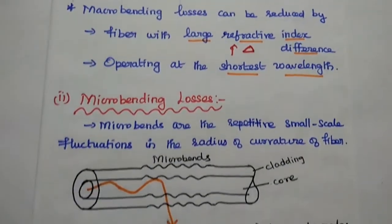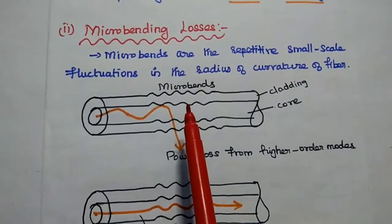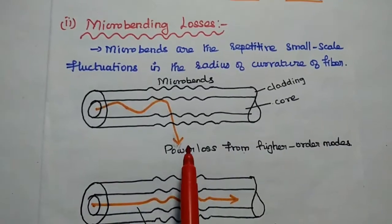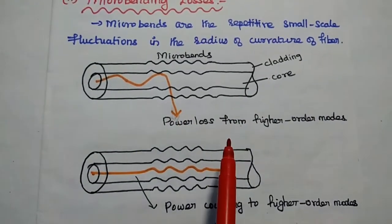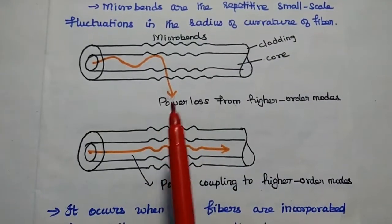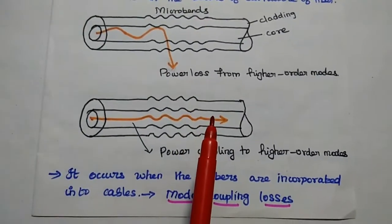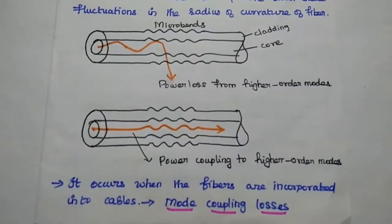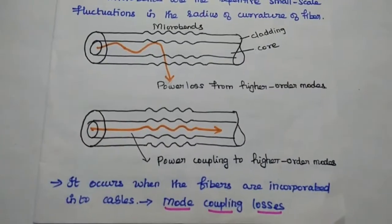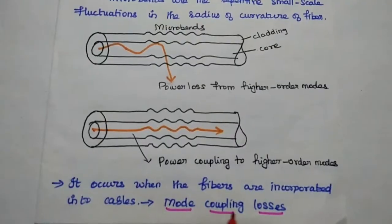Next one is micro bending losses. Here, micro bends are the repetitive small scale fluctuations in the radius of curvature of the fiber. It can cause the power loss from higher order mode or power coupling to a higher order mode. Either we can lose the power or we can couple the power with these fluctuations. The micro bending loss occurs when the fibers are incorporated into other cables. It can also be defined as mode coupling losses.